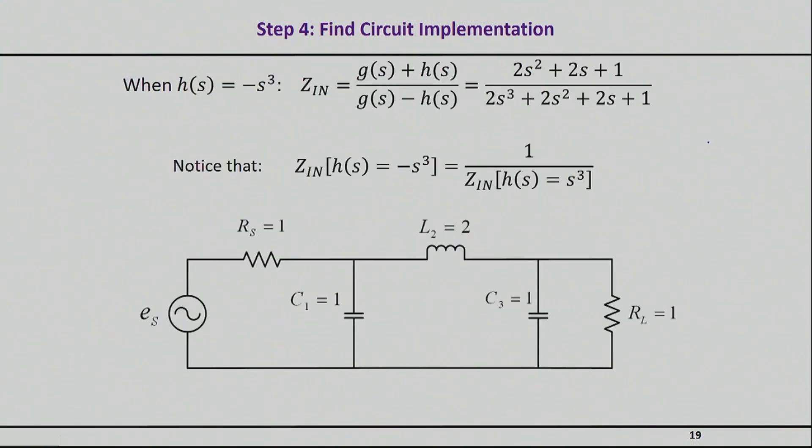So, let's continue with step 4 here, by looking at the second possibility. So, the second possibility is that we choose H of S to be negative S cube. One can go basically through identical process like we did before, or you can simply observe that the Z input, when you choose the H of S to be negative S cube, is simply 1 over the Z input of the previous scenario.